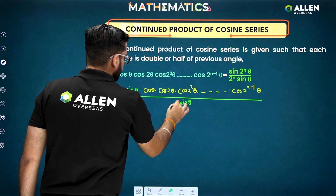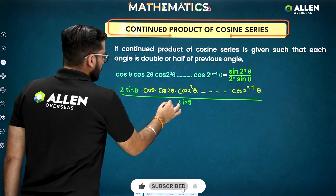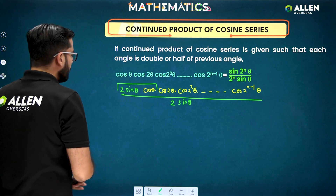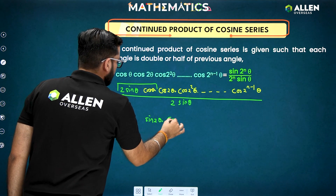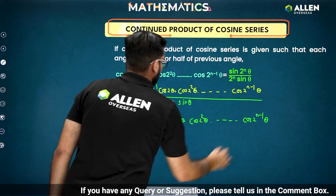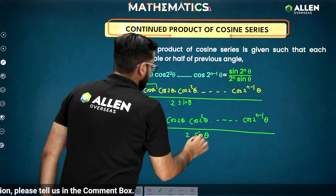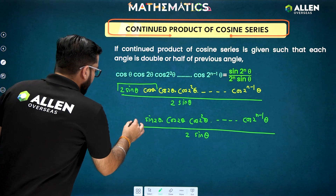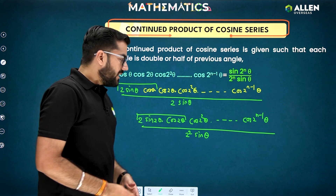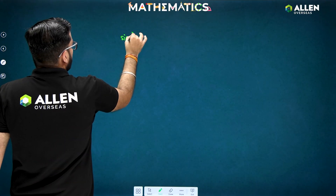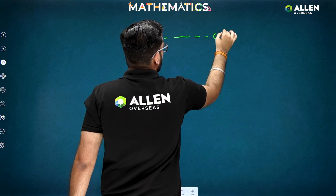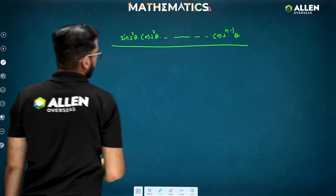Now I am going to multiply by 2 because I can see we have 2 sin a cos a, and I am going to follow this pattern. That gives us sin 2θ, and then we have cos 2θ · cos 2²θ and so on till cos(2^(n−1))θ. In the denominator we have 2 sin θ. Now if I have 2 here, then 2 sin a cos a again becomes sin 2θ — so the denominator becomes 2² sin θ.